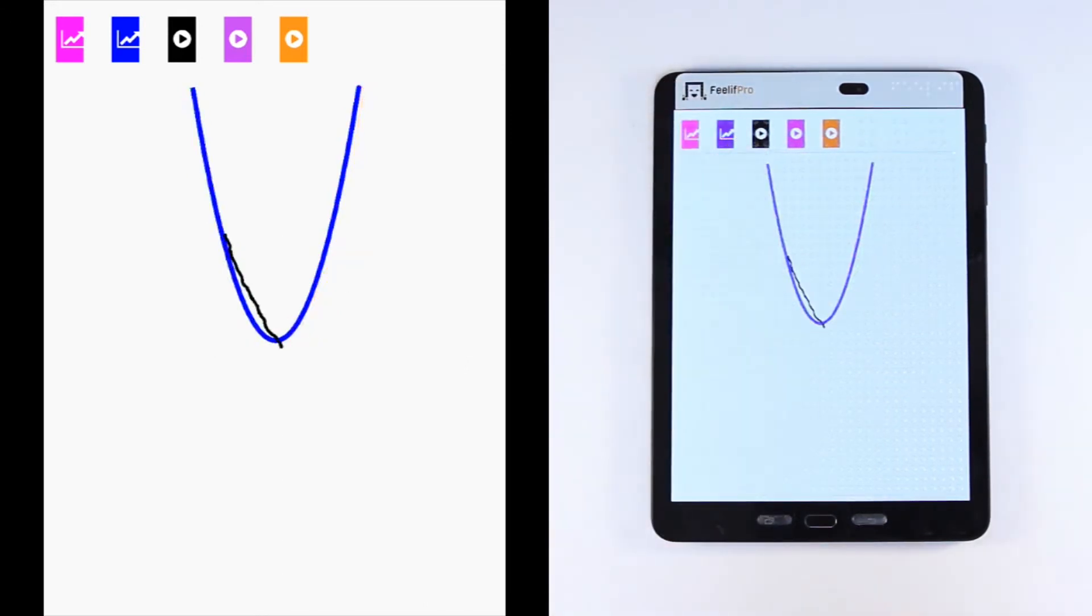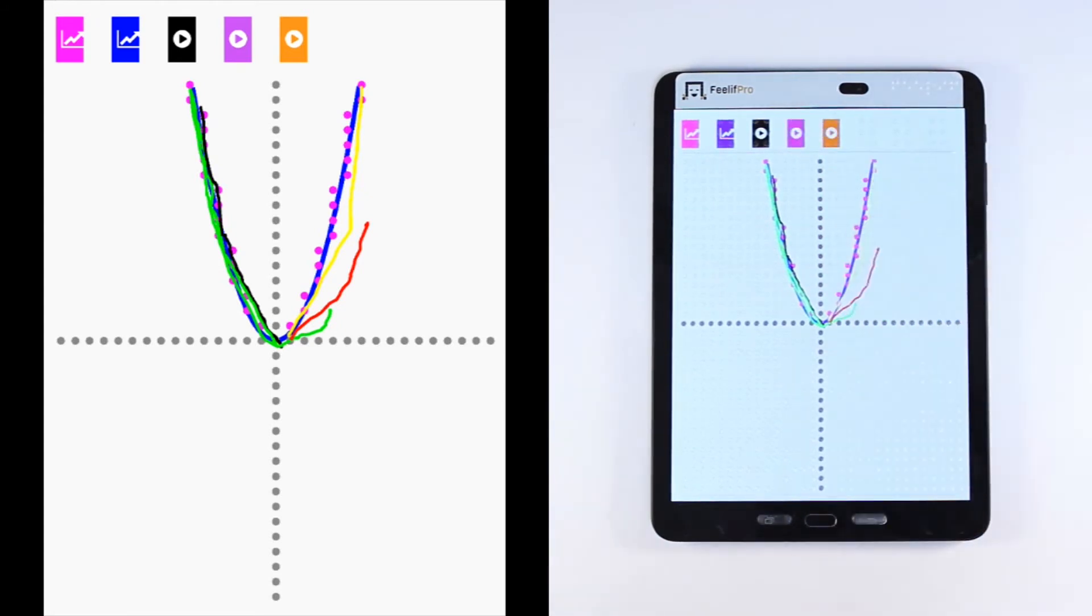To see the animation of how the user was tracking the function, double tap the third button. And to see the animation of how the student found all the zeros, double tap the fourth button. The fifth button works by the same principle when you double tap it. The animation will show you the performance of the student searching for minimums and maximums.